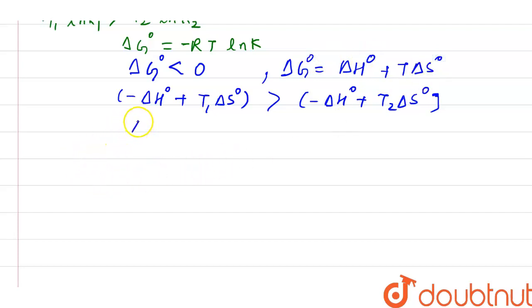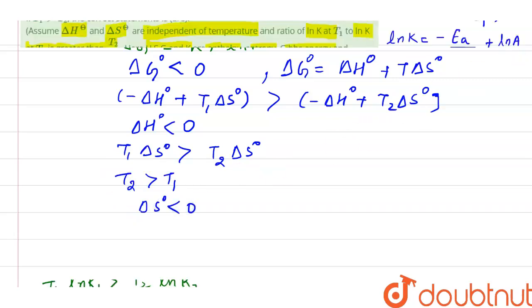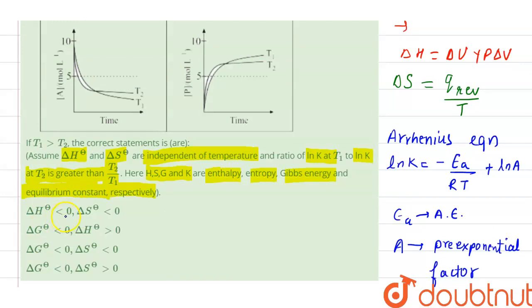Now we can say that T1 delta S not is greater than T2 delta S not. So T2 is greater than T1, hence delta S not is less than zero. From here we can say that delta H not is less than zero and delta S not is less than zero. This is the correct statement if T1 is greater than T2.